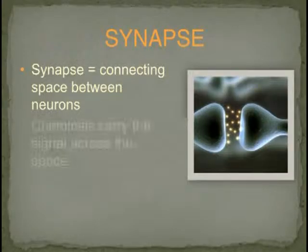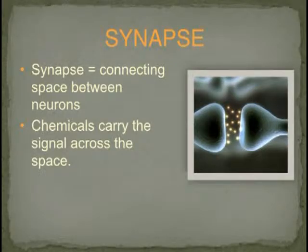This space, or synapse, is where chemical impulse is transmitted from one neuron or brain cell to the next.